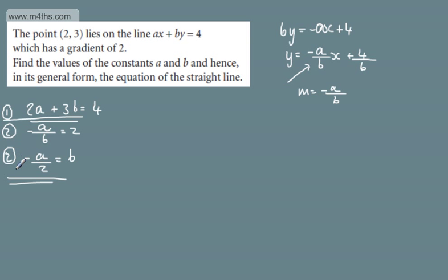So, all I'm going to do now is take equation 2 and substitute it into equation 1. So, if I do that, I'm going to eliminate b. So, equation 1 becomes 2a plus 3 lots of minus a over 2 and that will be equal to 4. So, I've got 2a minus 3 over 2a, which will give me a over 2. That's equal now to 4. Multiplying both sides by 2, we can see that a is going to be equal to 8.